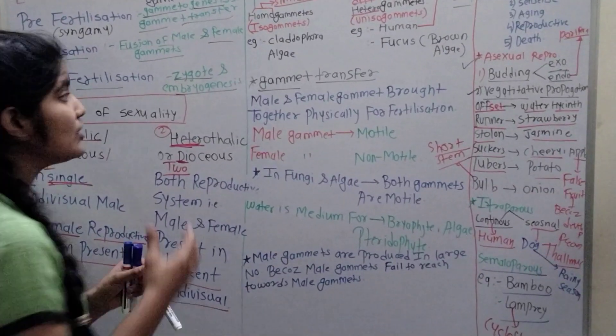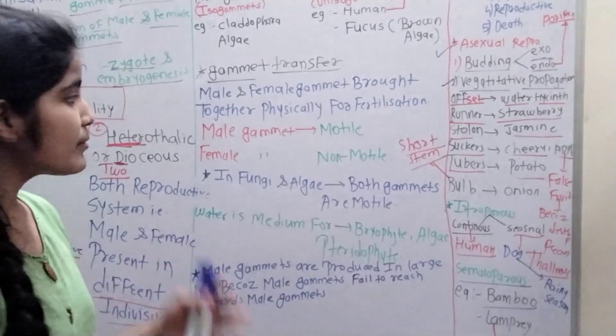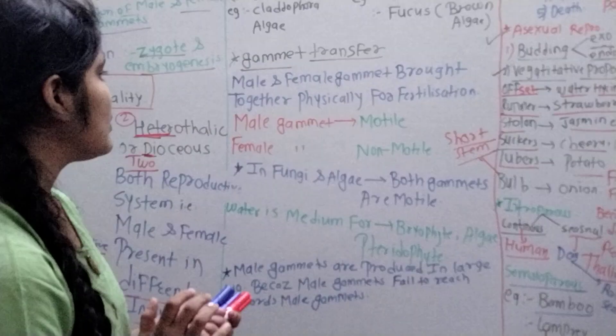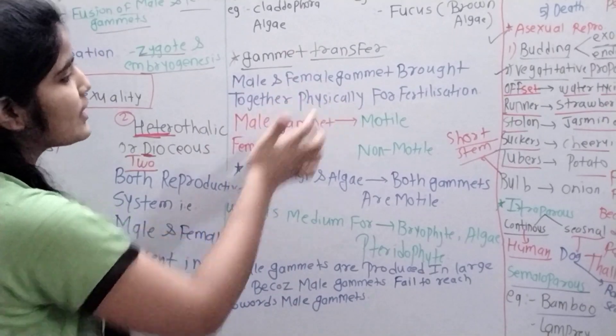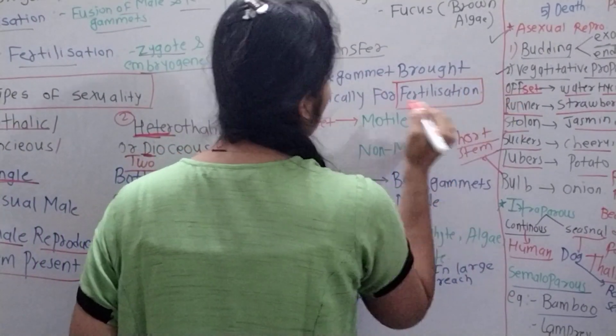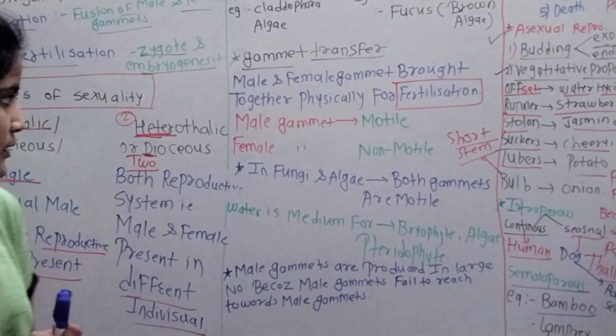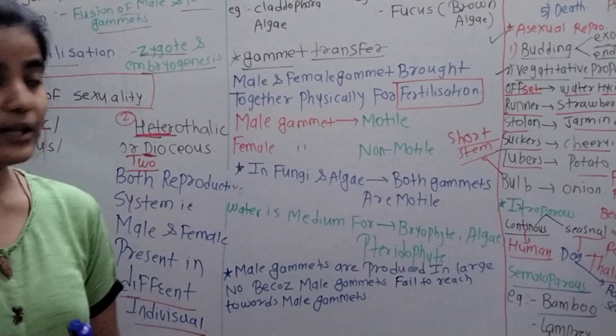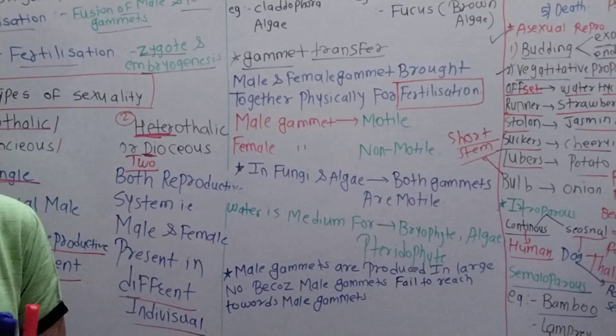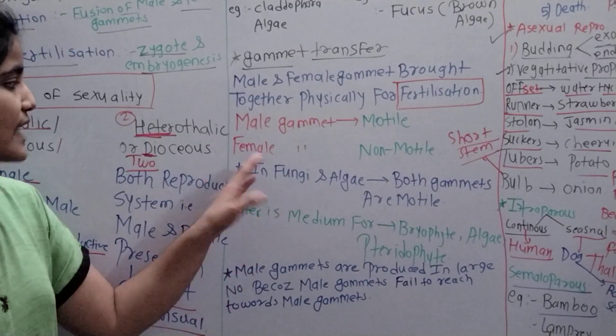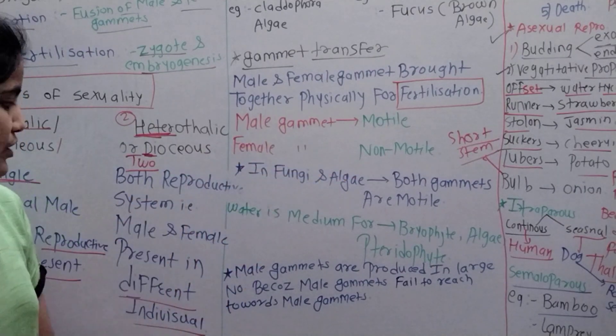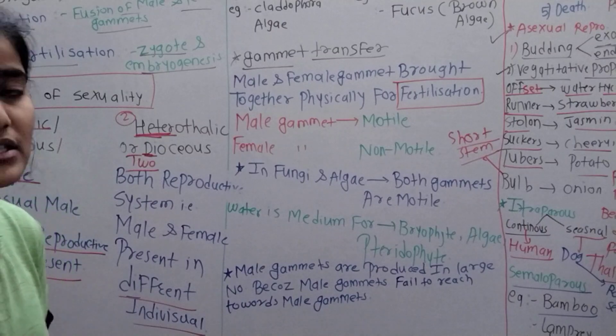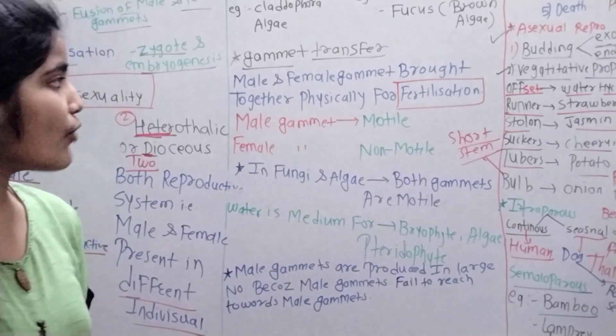Next point is gamete transfer. How gamete transfer? Some gamete transfers by water, air, through winds, etc. Male and female gametes brought together physically for fertilization. Male gametes are motile and female gametes are non-motile. In fungi and algae, both gametes are motile. Male gametes produce more because these are motile and fail to reach female gametes. That's why they produce more in number. For bryophytes, pteridophytes, water is the medium for their fertilization.